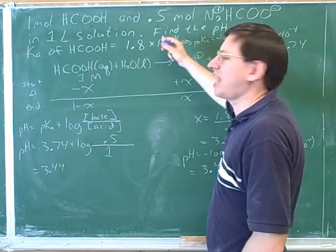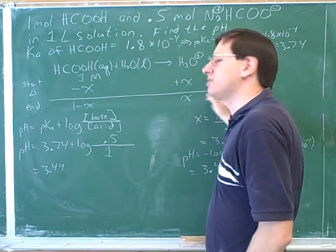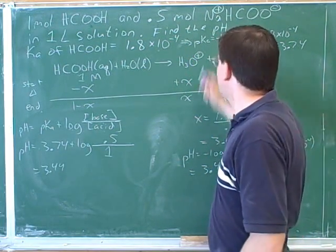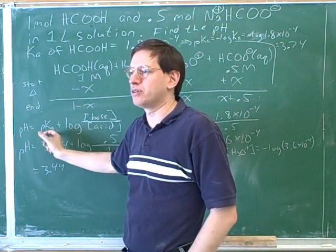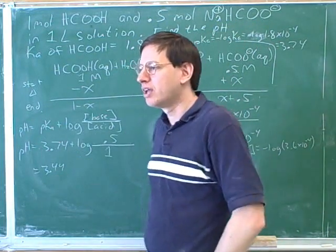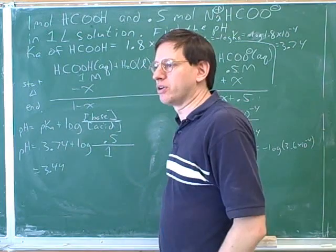If they had given us, in this case they gave us the Ka. So maybe it was more natural to use the equilibrium approach. If they had given you the pKa, maybe it would be more natural to use the Henderson-Hasselbalch approach. But you can always use either one by going back and forth.